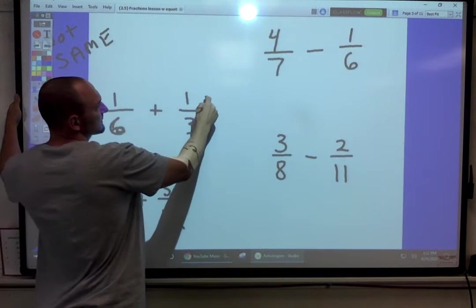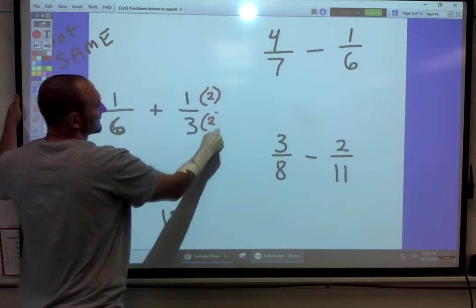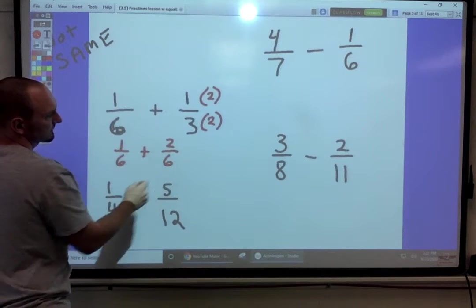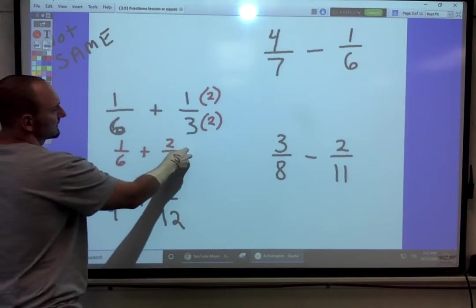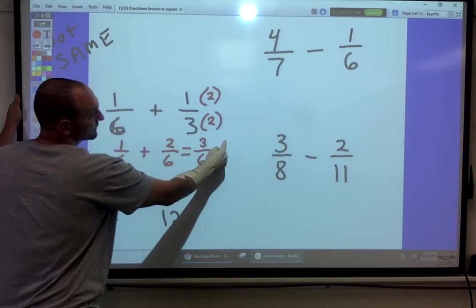Two. So I can scale this fraction by timesing it by two. We'll have one-sixth plus two-sixths. That will get us three-sixths, which can simplify down to one-half.